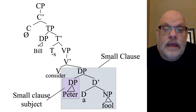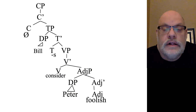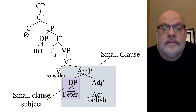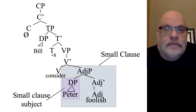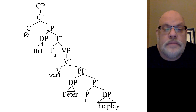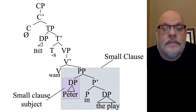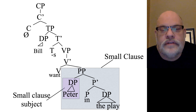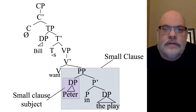Another example: 'Bill considers Peter foolish.' Here again we need a place to put that subject — it sits in the specifier of the adjective phrase. And then for the prepositional phrase, 'Bill wants Peter in the play' — Peter is showing up in the specifier of the PP. So this notion that specifiers are subjects goes a long way to explaining the properties of small clauses. It also explains why we have specifiers — it's where subjects go.